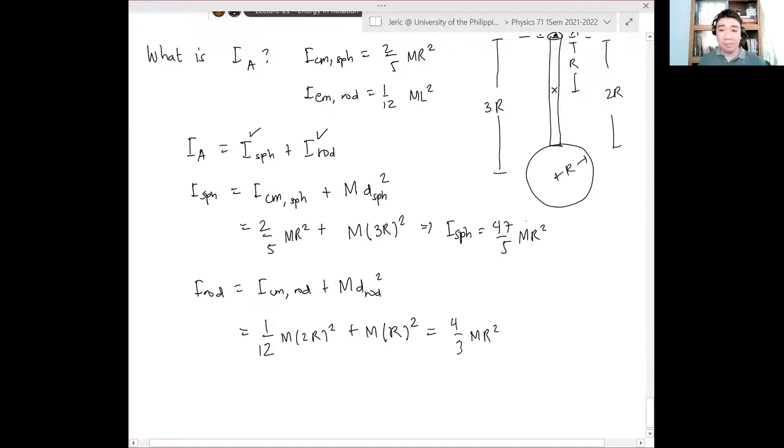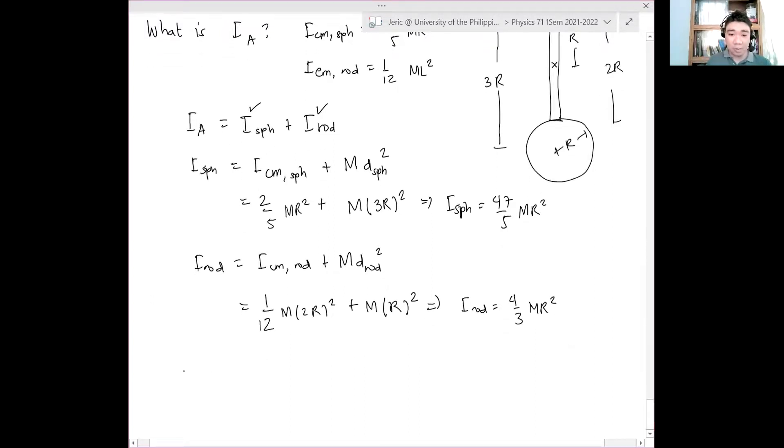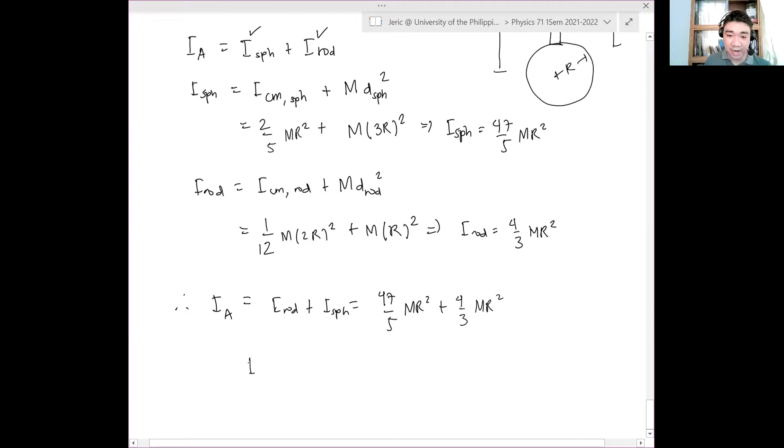And remember, we've figured it out. Wait. Let me write this as I rod equals 4/3 MR². And hence, the total moment of inertia about point A is simply I rod plus I sphere which is equal to 47/5 MR² plus 4/3 MR². And when you do that, I don't like calculating fractions, IA is 161/15 MR². That is the moment of inertia of this system.